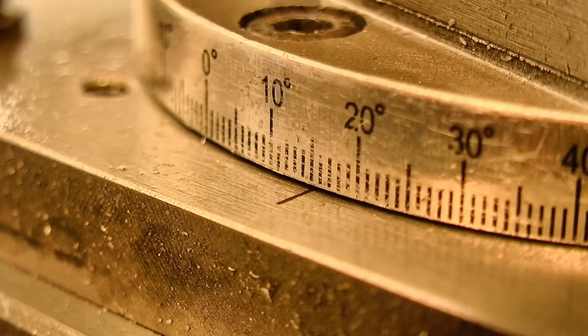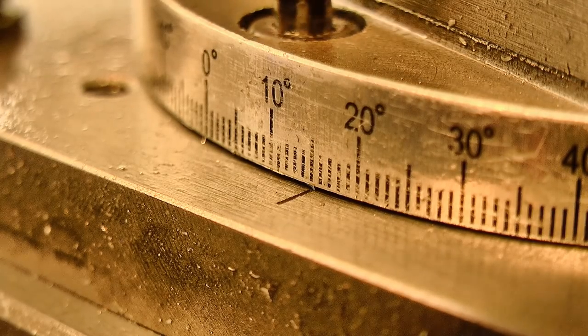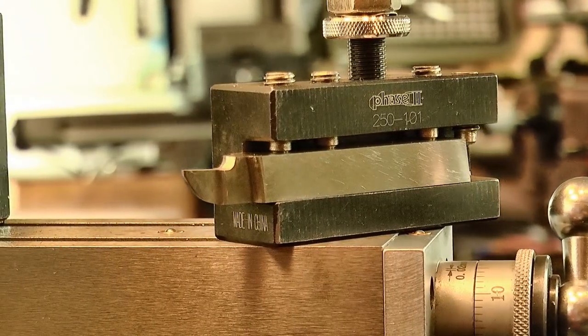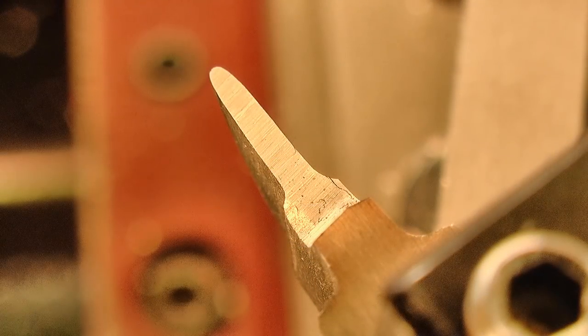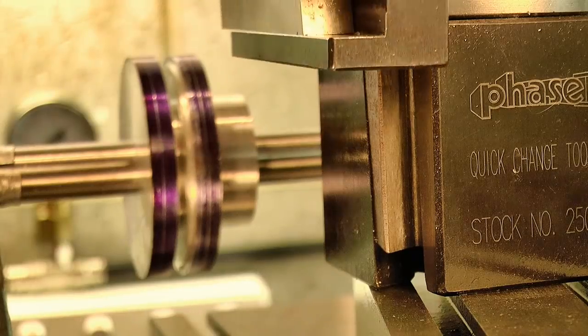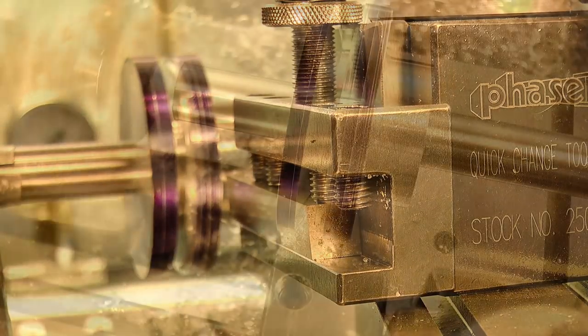Then I set the compound over to 15 degrees, to cut the flanks of the groove. I've ground this narrow blunt nose cutting tool to do the cutting. It can cut on both sides of the tool, which is going to be handy in this case, to get a matching surface at the bottom of the pulley groove.